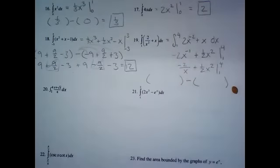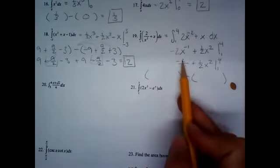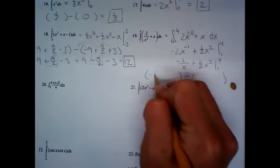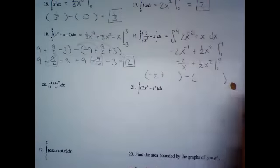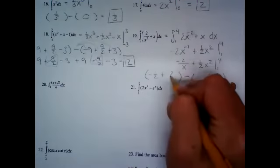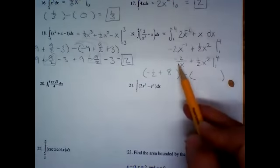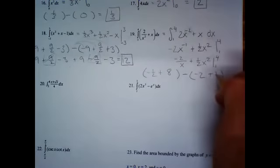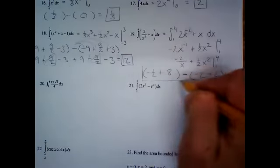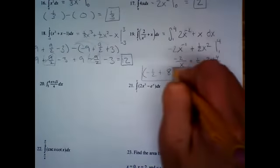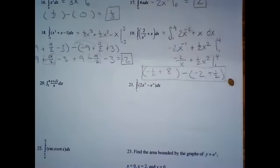We're going to do upper boundary minus lower boundary. If you plug in 4: negative 2 fourths, that would be negative one-half, plus 4 squared is 16, half of that is 8. Then plug in 1: that would give you negative 2 plus one-half. If it was multiple choice, you would keep going and distribute the negative sign and simplify further.